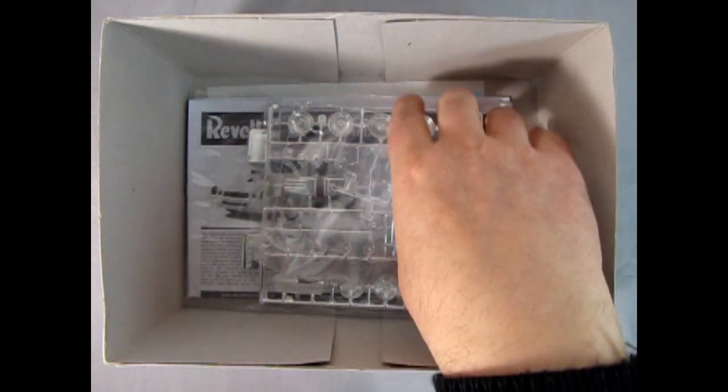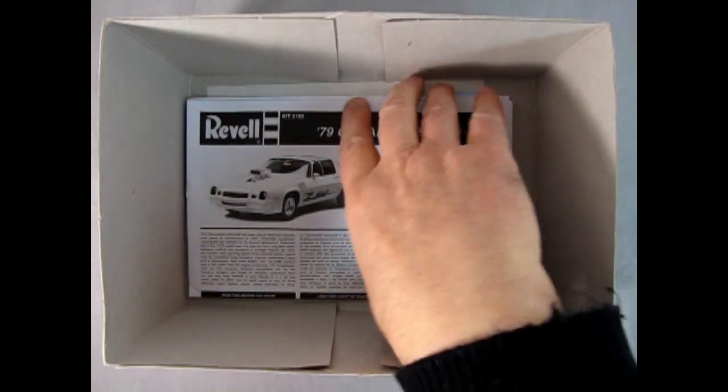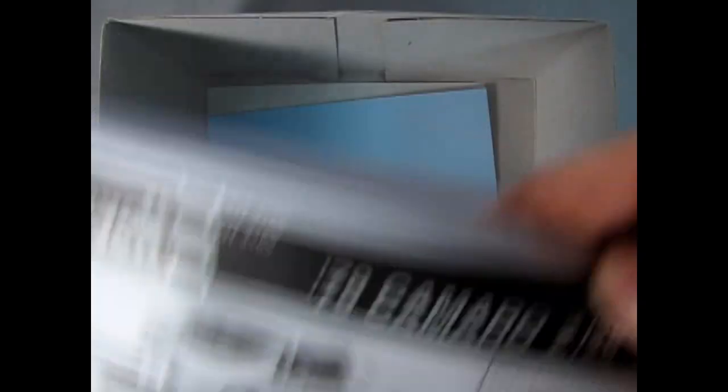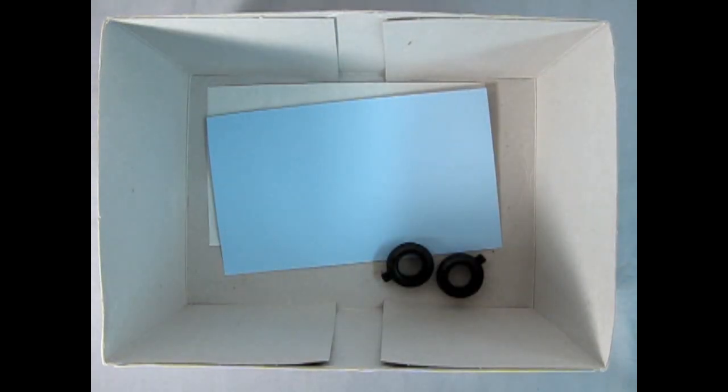Here's some nice slicks. There's our glass, our chrome in a bag, and our instructions and the decal sheet down below. And lo and behold we've got our street machine tires as well.